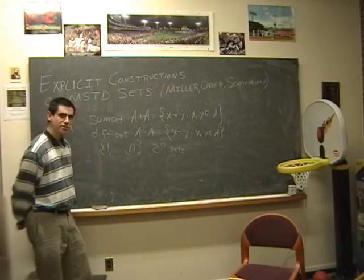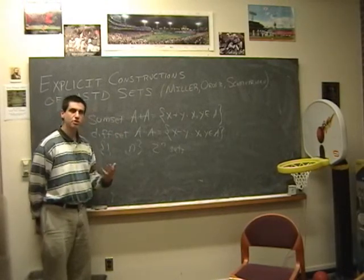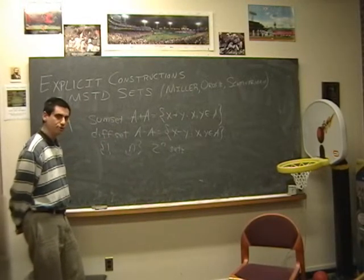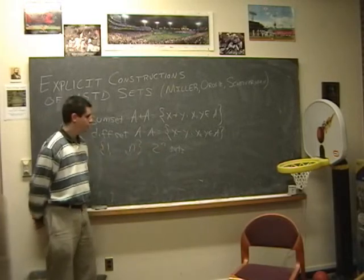So the next natural question is now that we know there are many of them, can we give explicit constructions of more sum than difference sets? And so the previous constructions were very small, sort of like square root of 2^n sets.